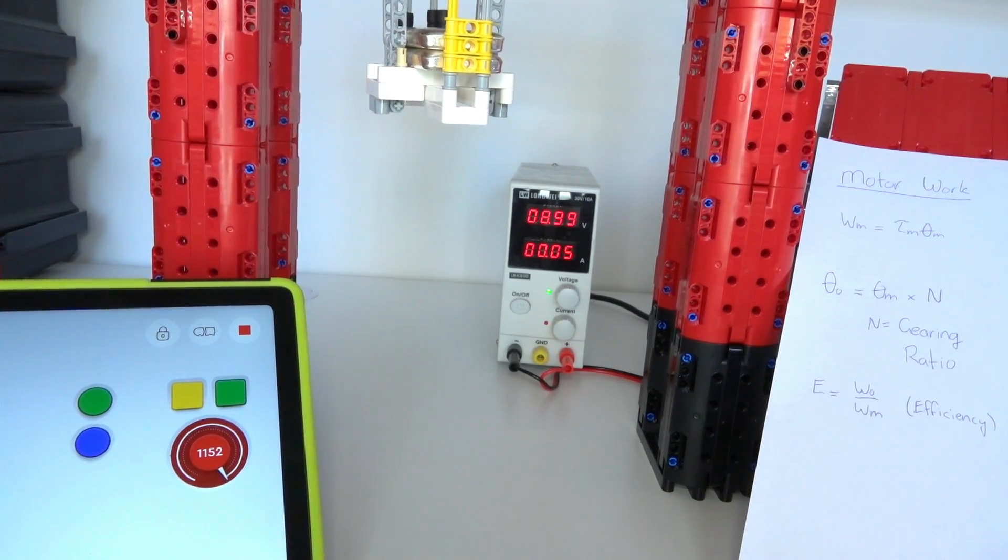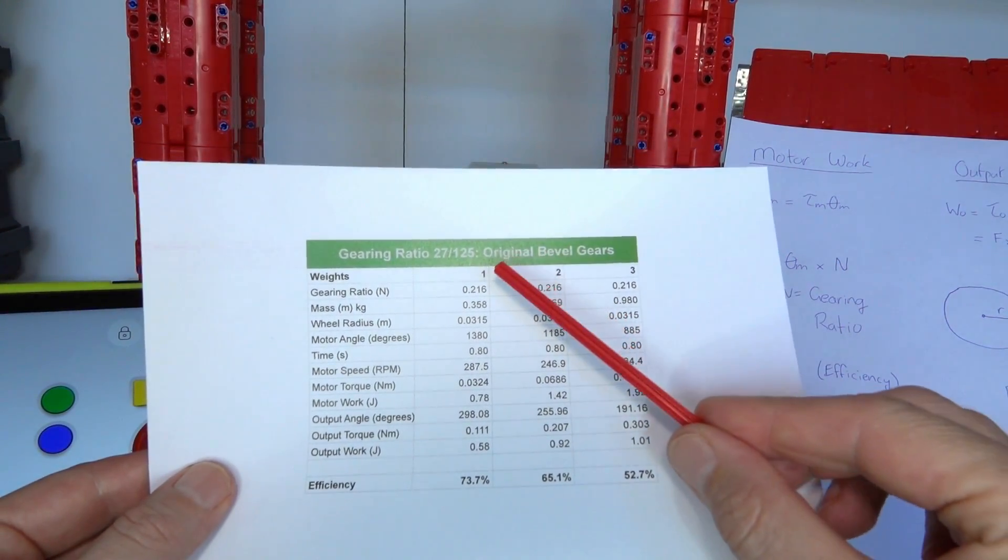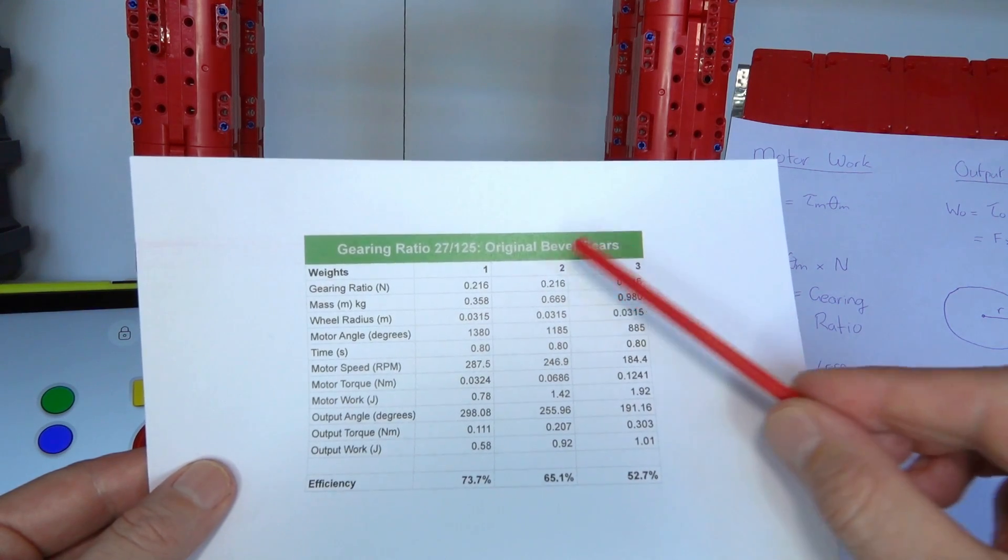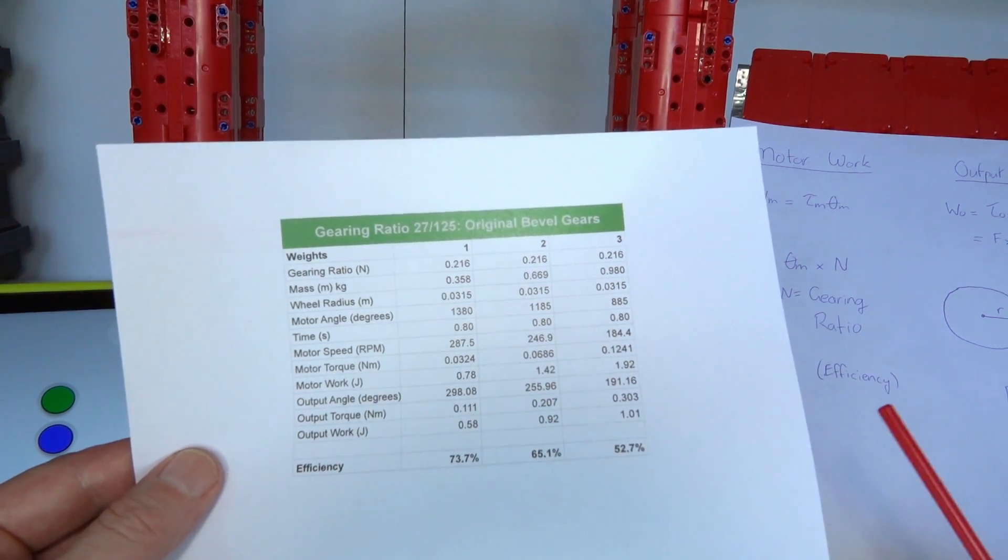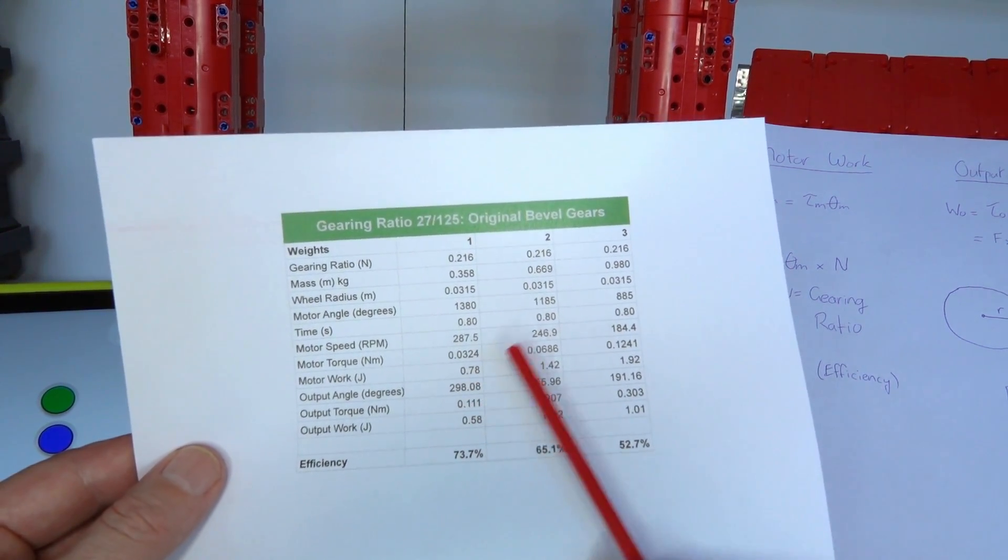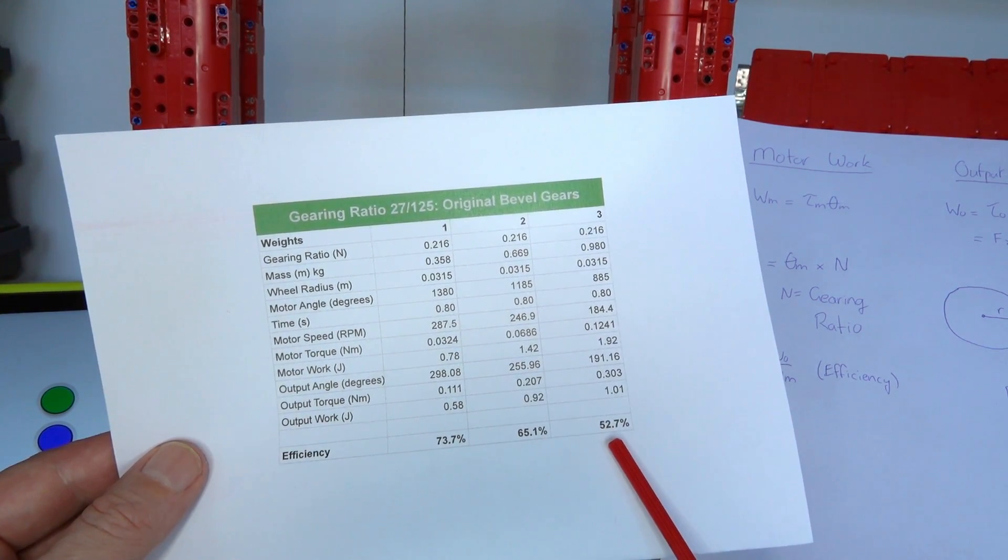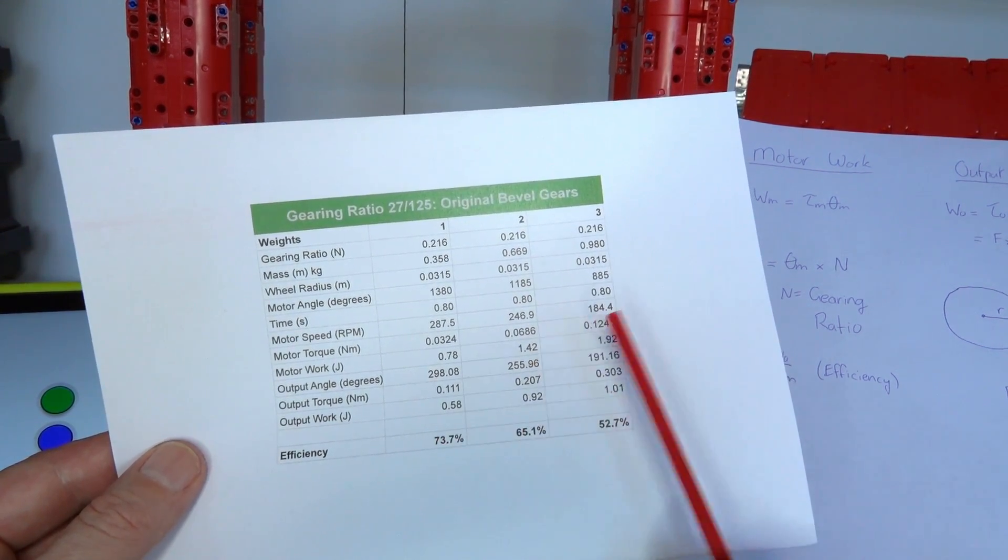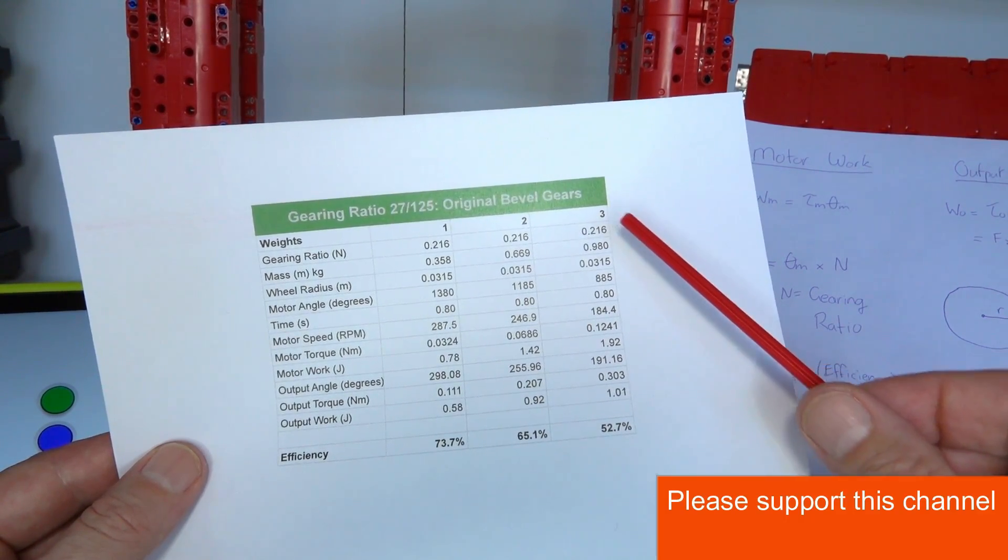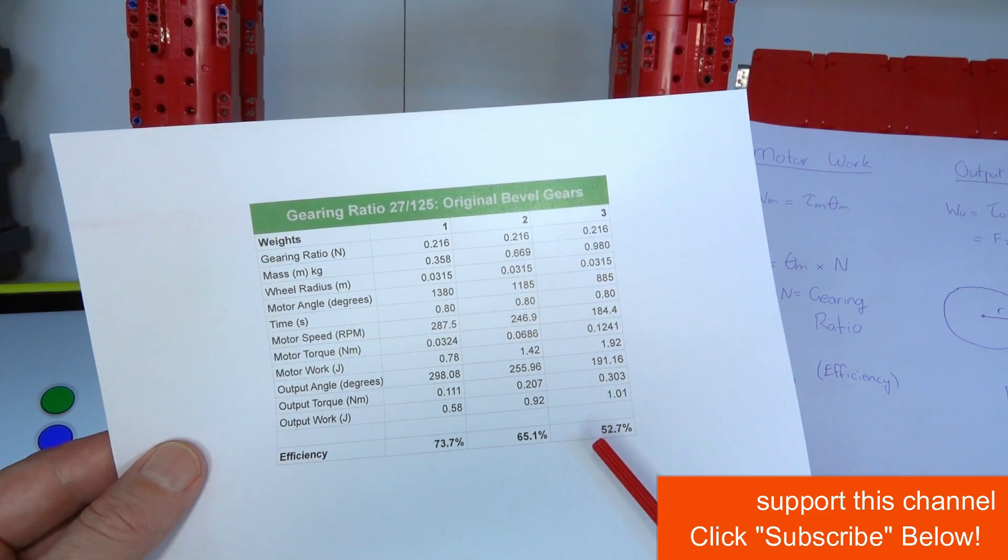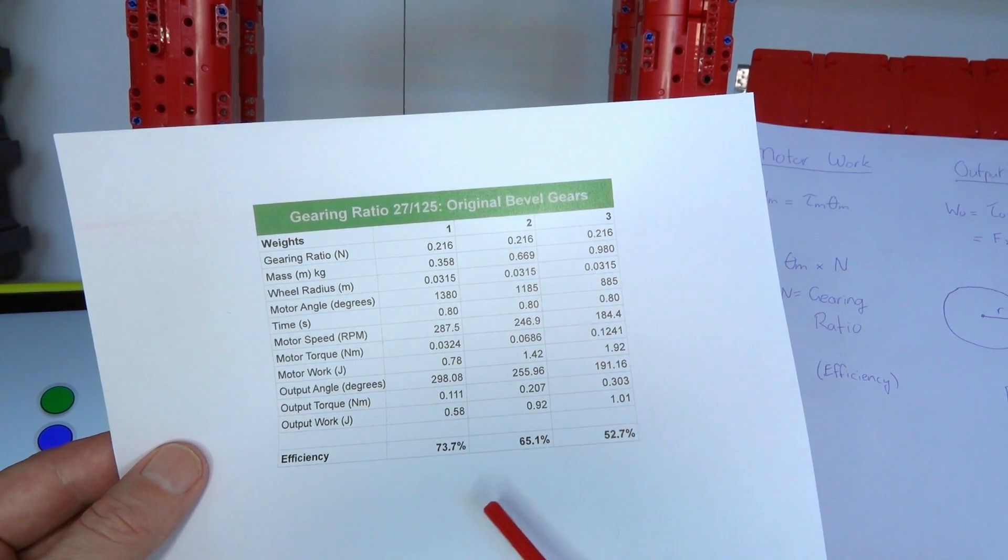Alright so here's the results for the original bevel gear. So what I did is ran the experiment with one silver bar, two silver bars, and three silver bars and each of those gave me a different average number of degrees of rotation of the motor. Then from that I can calculate the overall efficiency which is shown at the bottom here: just with one silver bar 73.7%, two bars 65%, and three bars 52%. So as you can see here obviously as the number of bars increases the efficiency decreases and that's simply because with a higher loading there was a lot more friction in the gears which means more energy loss which means less efficiency. So these are the results of the original bevel gears and now we'll do the experiment for the new gears and see how they compare.